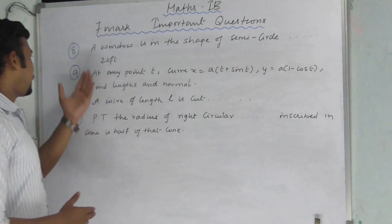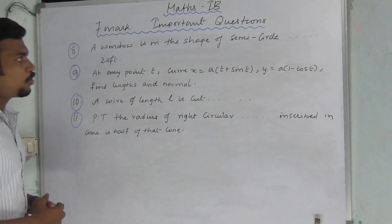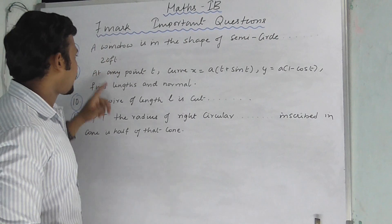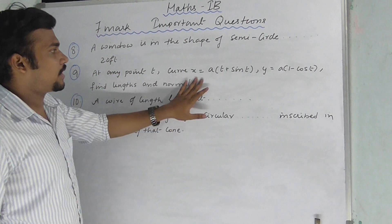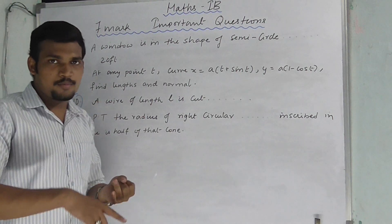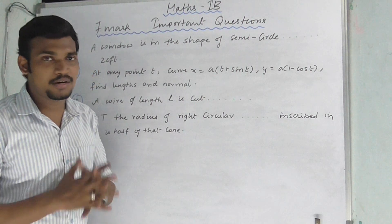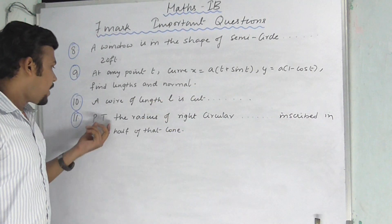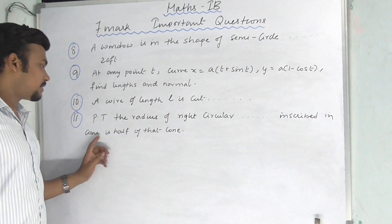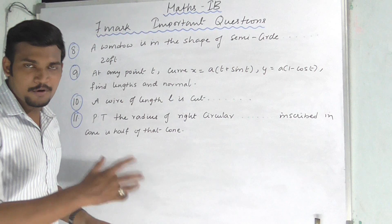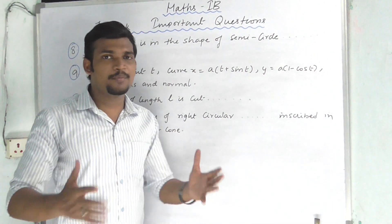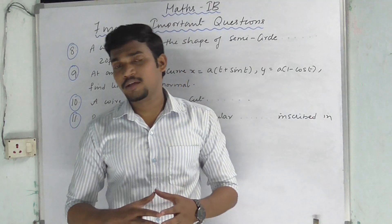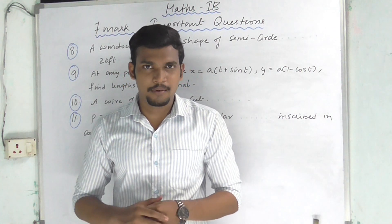Next important questions are 8, 9, 10, 11 mark types. If a window is in the shape of a semi-circle, you can solve it directly — it will be 20 feet and clear. At any point on a curve, you can find x to y. The length is normal, the length is sub-normal. A wire of length L is also a very important problem. Prove that the radius of the right circular cone inscribed in a cone is half of that cone. These are direct questions — intermediate level is always direct. There are 7-mark important questions for the public examination.